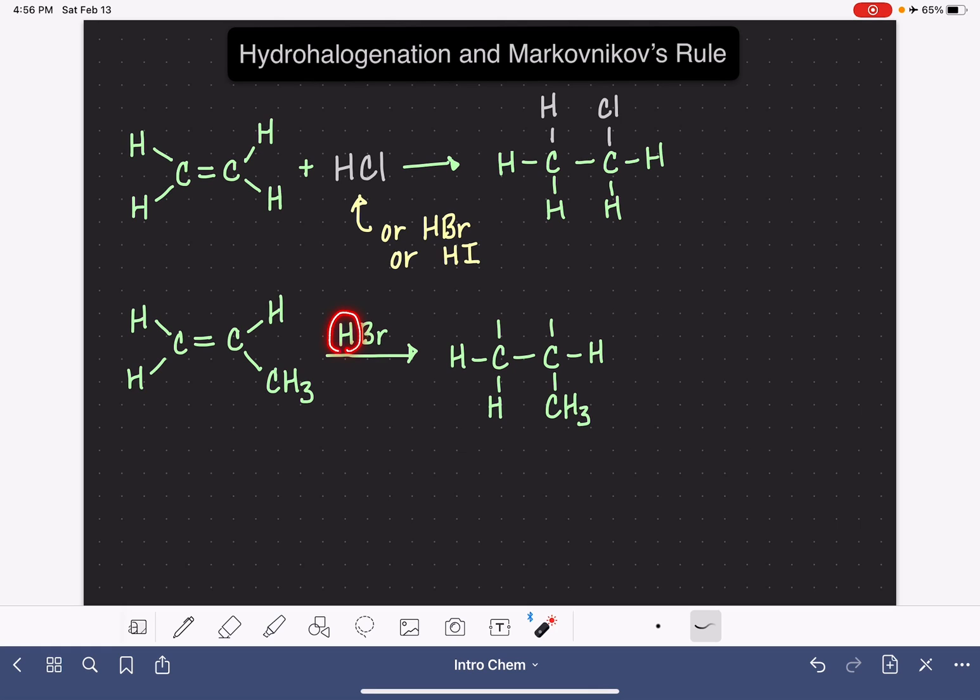Markovnikov's rule says that the hydrogen atom will attach itself to the carbon atom that has the most bonds to hydrogen. The hydrogen atom goes to the carbon atom of the carbon-carbon double bond that has the most carbon-hydrogen bonds already present. This is just going to add one more carbon-hydrogen bond.